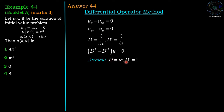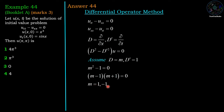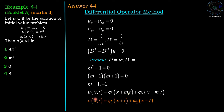Now assume D equals m and D' equals 1. Then we have the auxiliary equation m² minus 1 equals 0. The roots of the auxiliary equation are 1 and minus 1. Therefore the solution u(x,t) equals φ₁(x + m₁t) plus φ₂(x + m₂t), where m₁ and m₂ are the roots 1 and minus 1. So u(x,t) equals φ₁(x + t) plus φ₂(x − t).